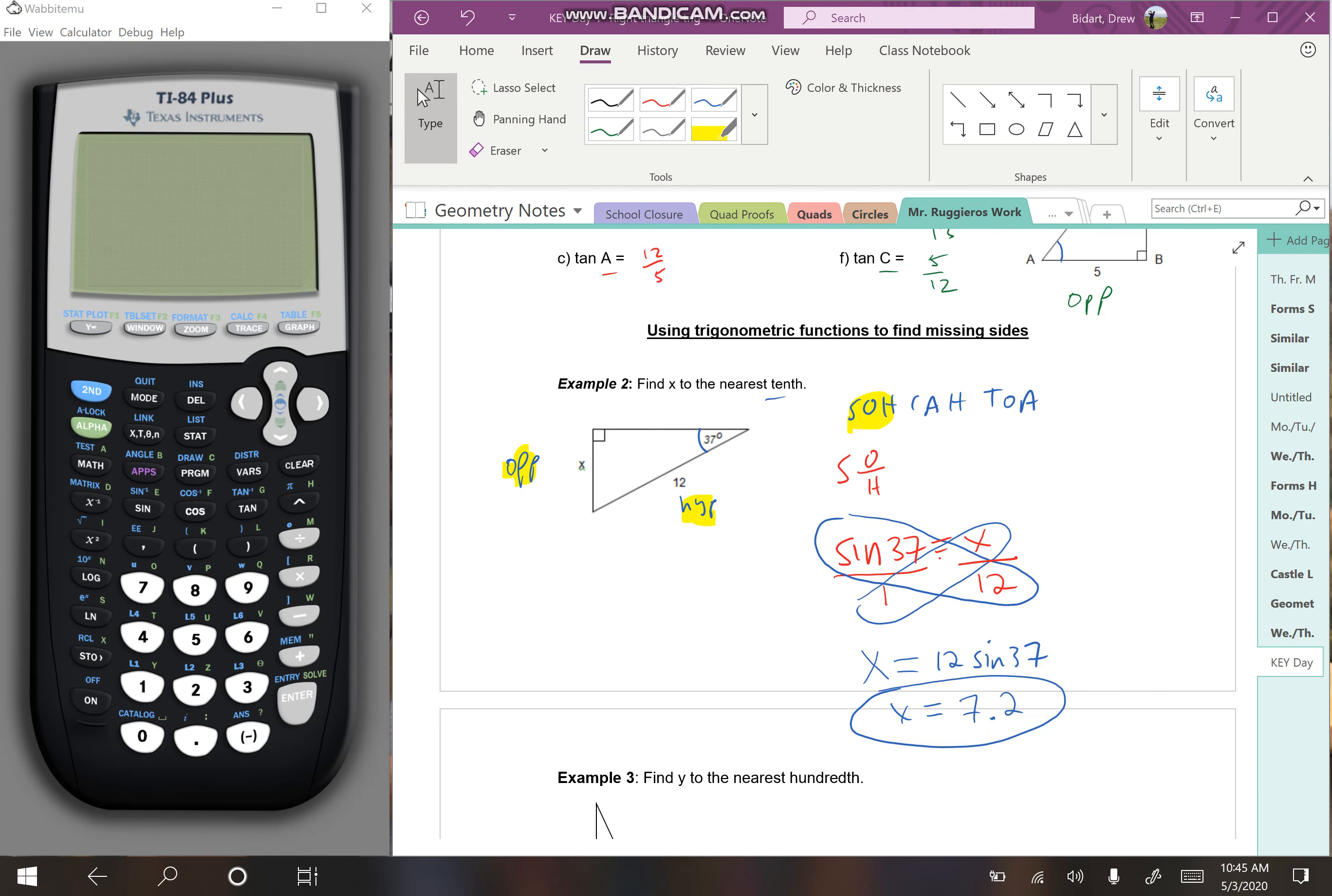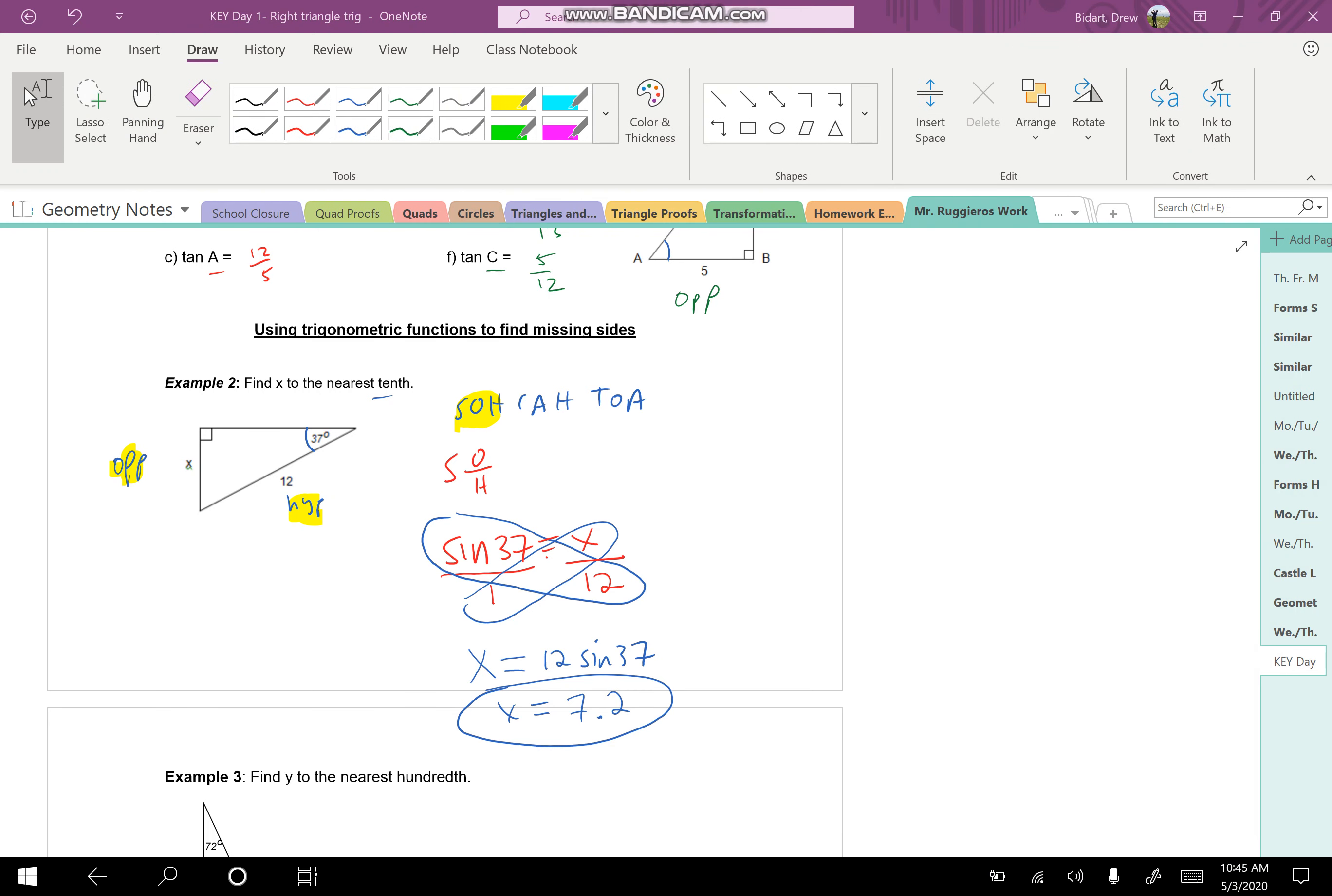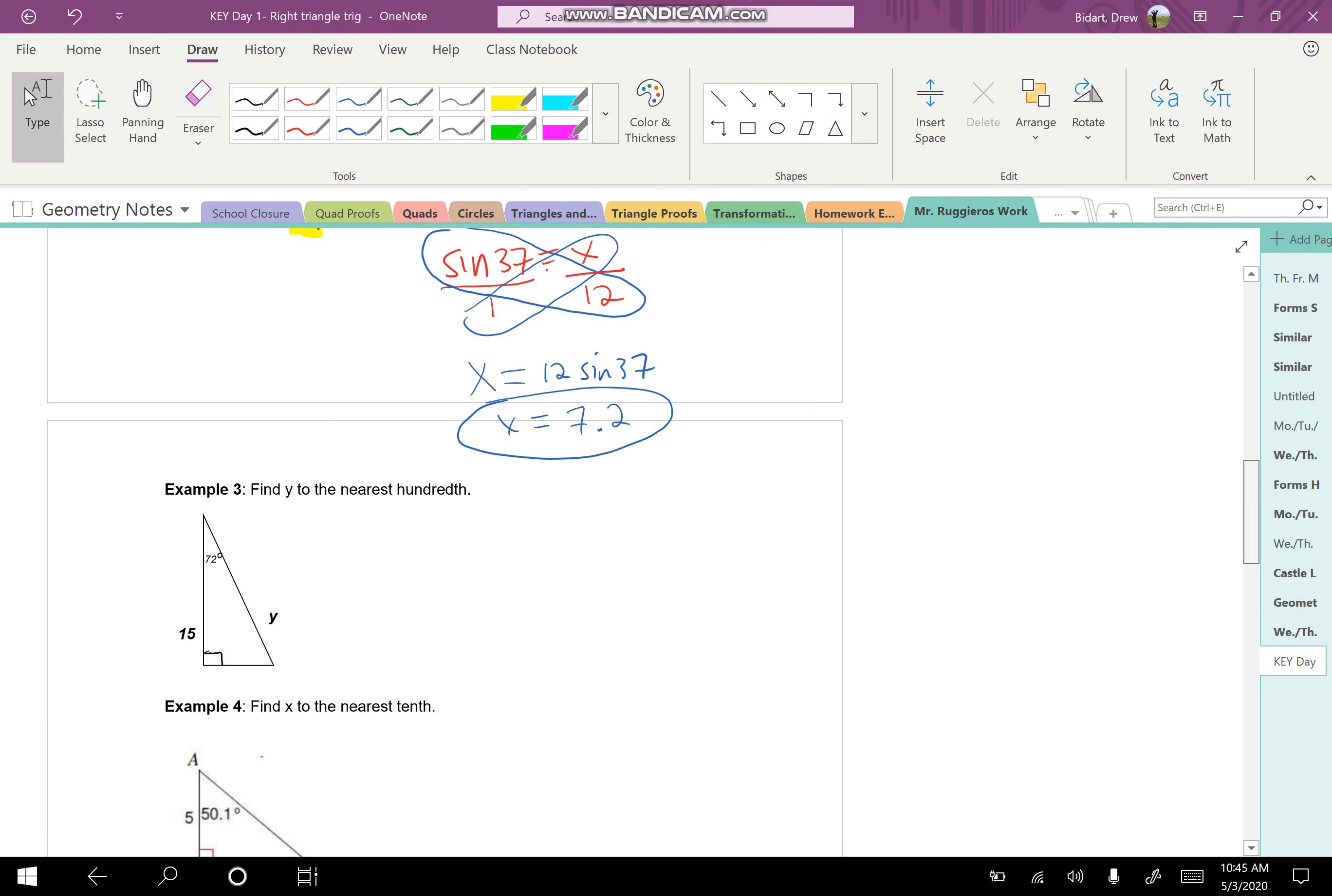You would have to cross multiply, and when we do that, you end up getting 7.2. All right, so now let's look at example number three.